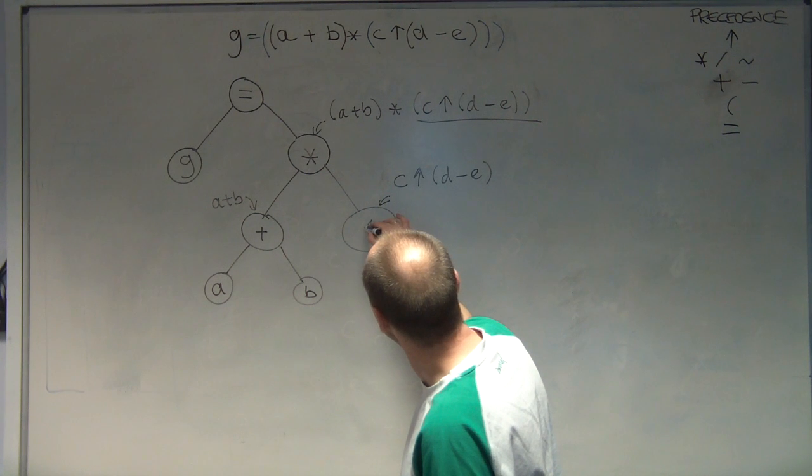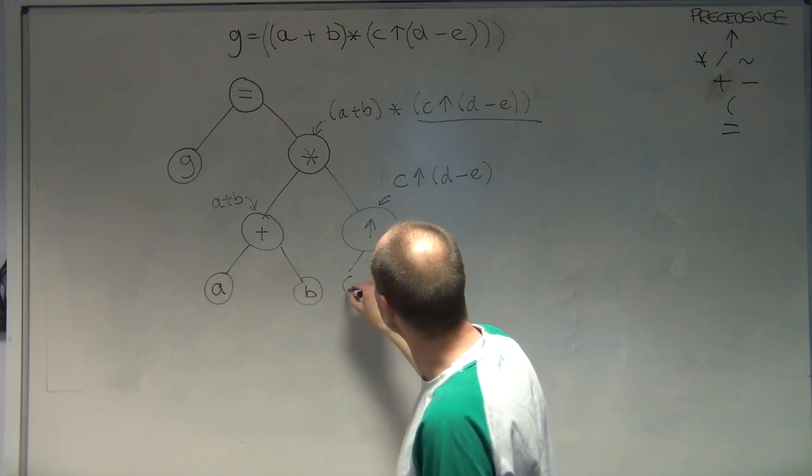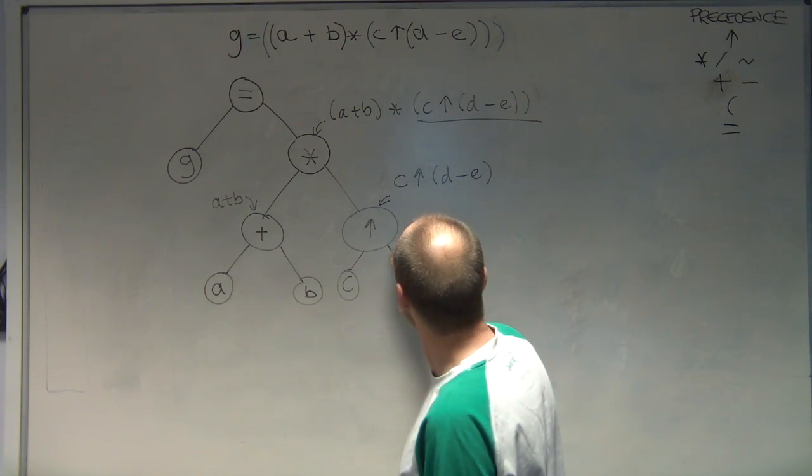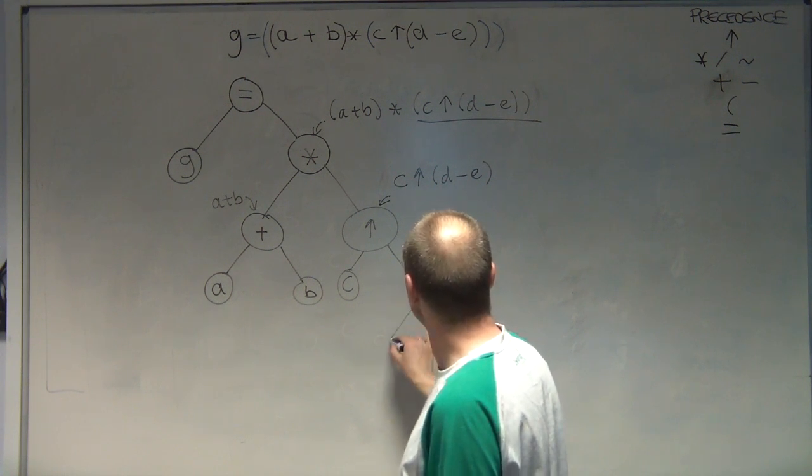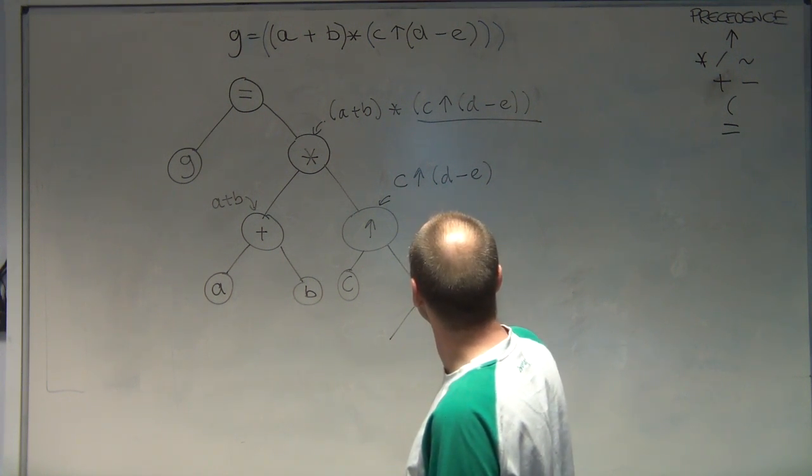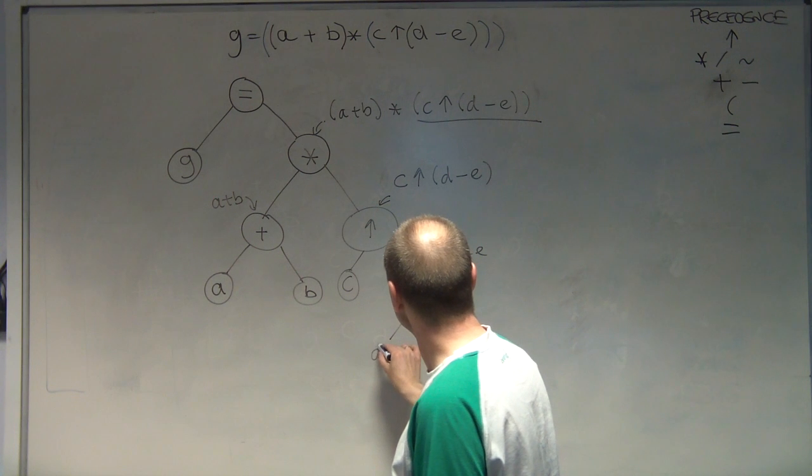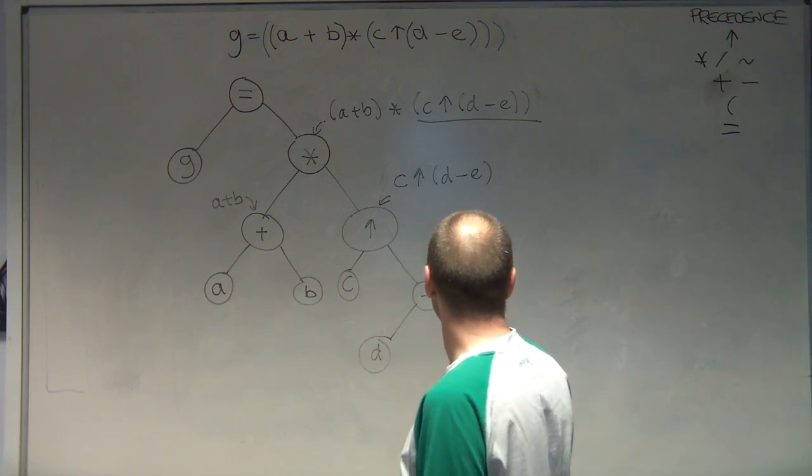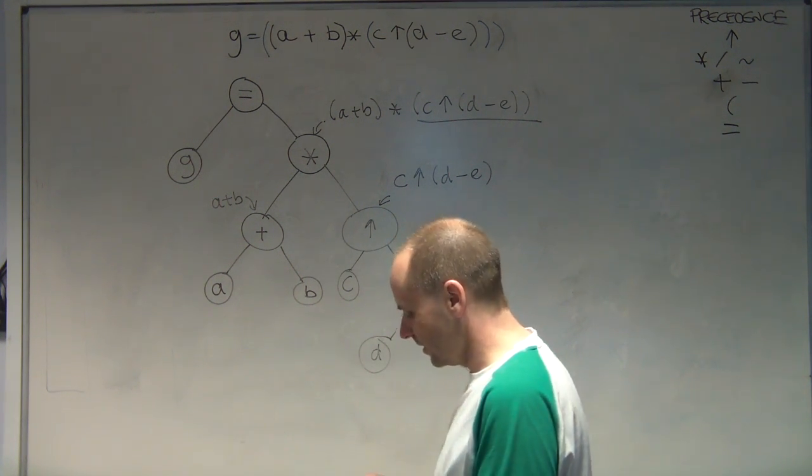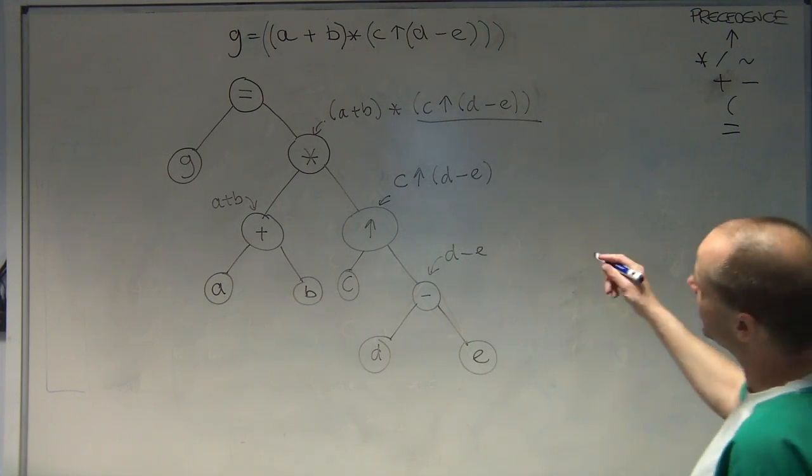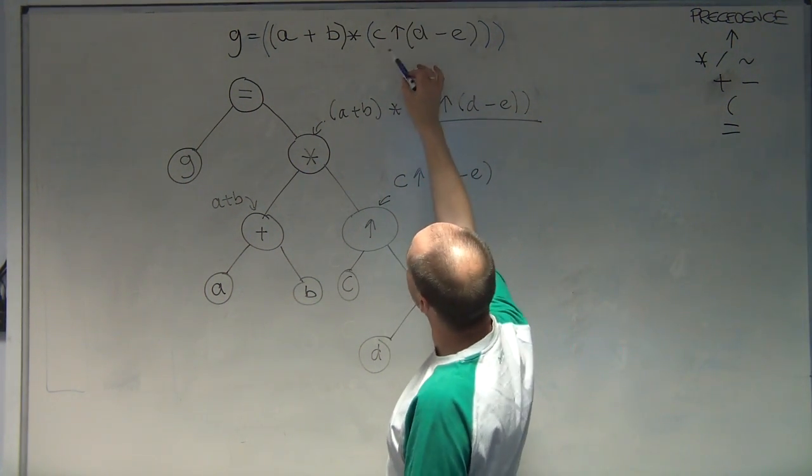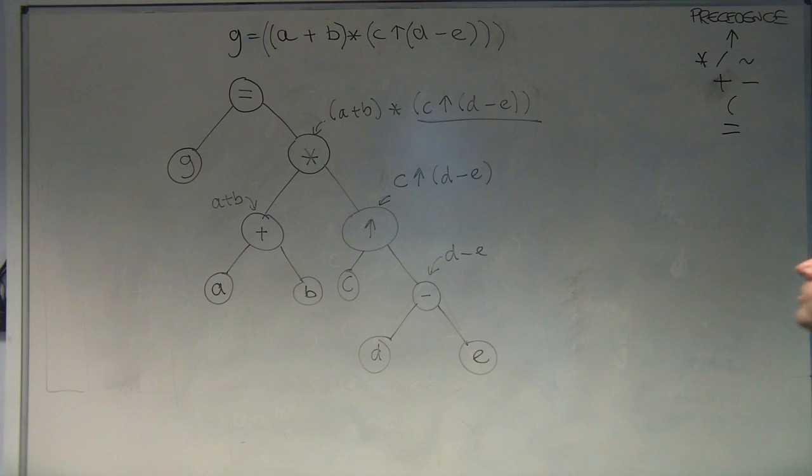Then we've got this one which is power. To the left of it is C. To the right of it is D minus E. So just put that in. D minus E goes there. Minus, D to the left, E to the right. So that's my expression tree. From that infix I've generated that tree.